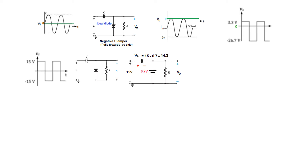The capacitor will be charged through this path, with current flowing in this direction — positive on one side, negative on the other. The charging voltage will be 15 volts total minus the opposition of 0.7 volts, giving 14.3 volts across the capacitor.